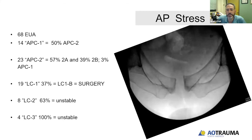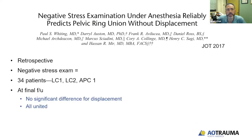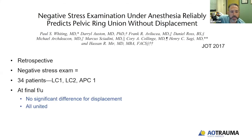This is the APC stress view for that patient — front and back imaging showing the stress. Another study from multiple authors at different facilities looked at the benefits of a negative stress exam regarding union without further displacement. This was a retrospective study of 34 patients with LC1, LC2, and APC1 patterns. There was no significant difference for displacement at final follow-up, and all fractures united.